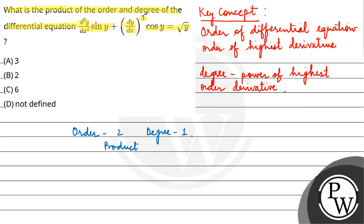So what will be the product of these two? 2 into 1, that is 2. So final answer is option B. I hope you understood it well. Best of luck.